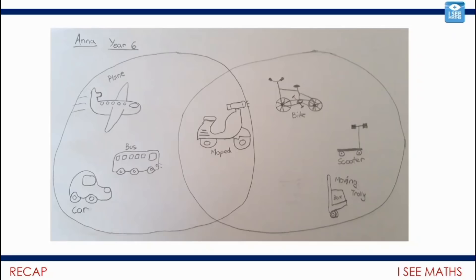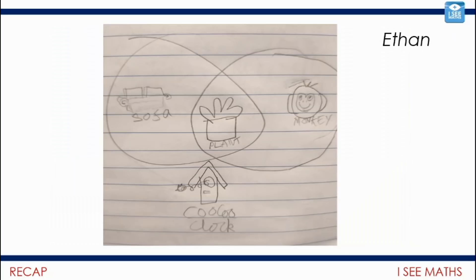Now there's two examples that are coming up. I just also thought they were absolutely brilliant. So have a look at this one from Ethan. What could the headings be? Pause the video. Okay, well Ethan let me in on the secret on this one. So the headings are things that are still and things that are alive. So the sofa and the plant pots are still, and the monkey and the plants are alive, but the cuckoo clock is neither still because of course it moves, nor is it alive. I mean, how good is that?